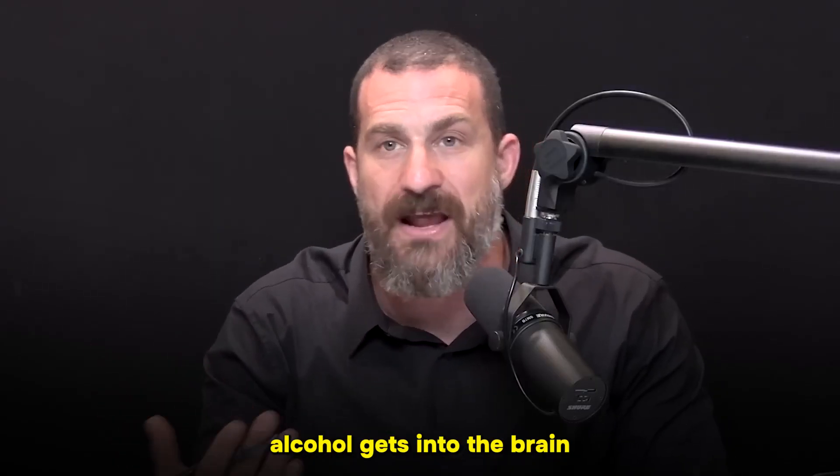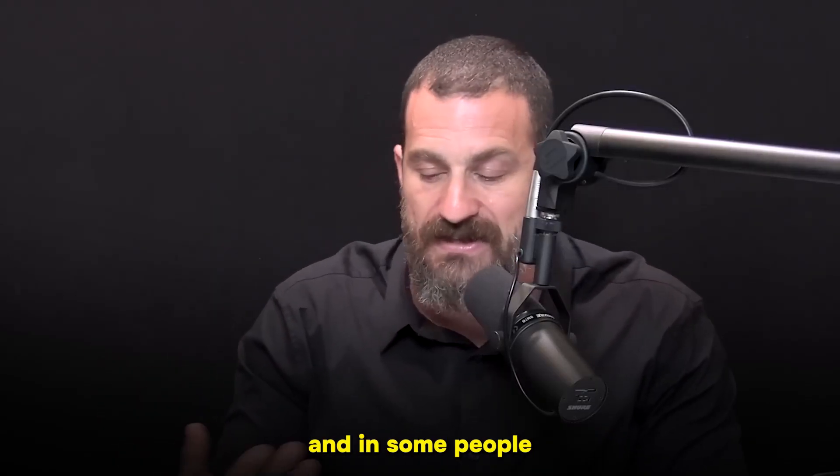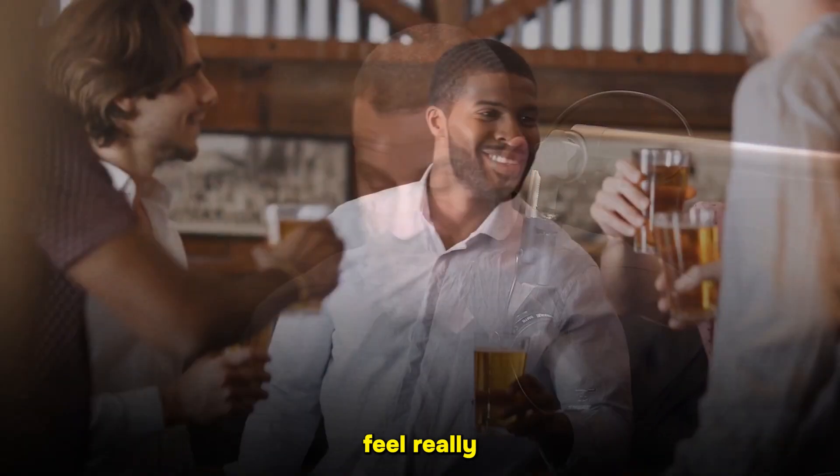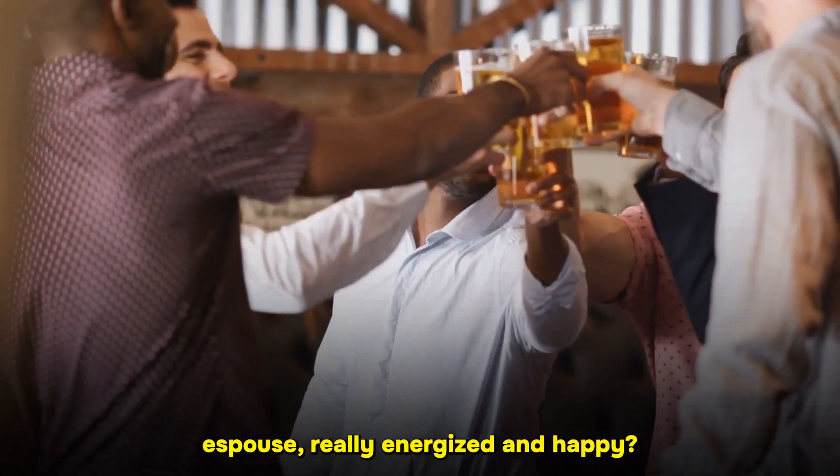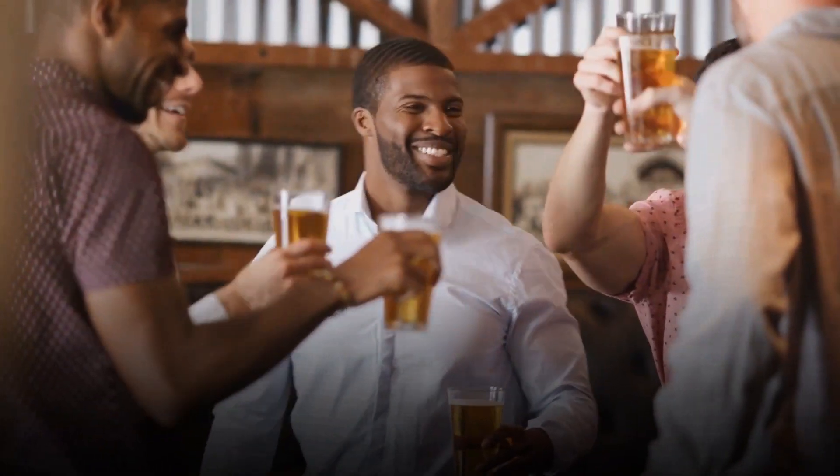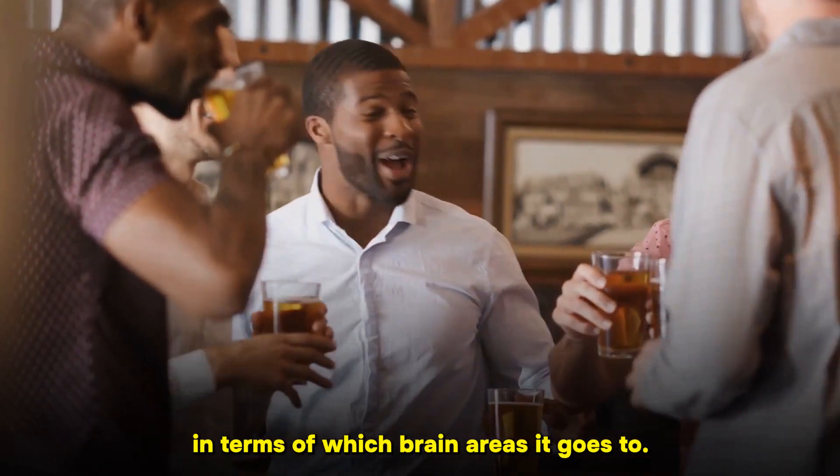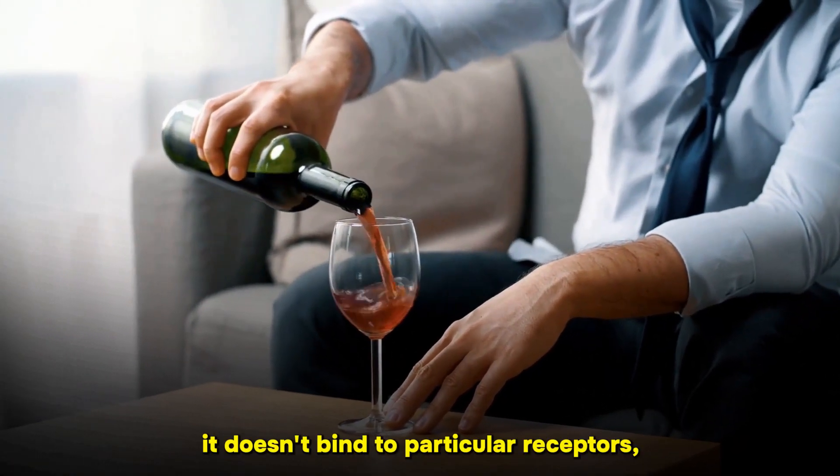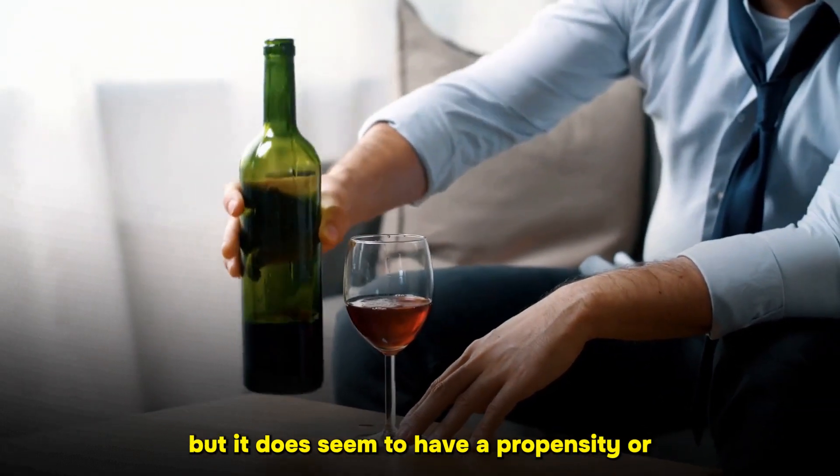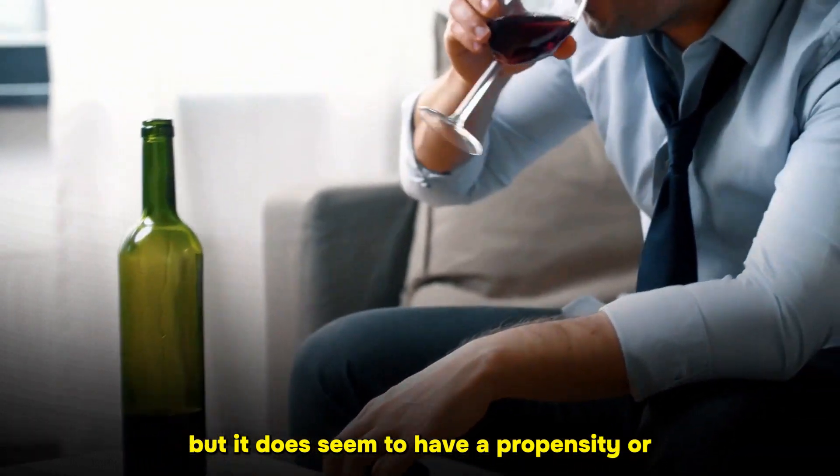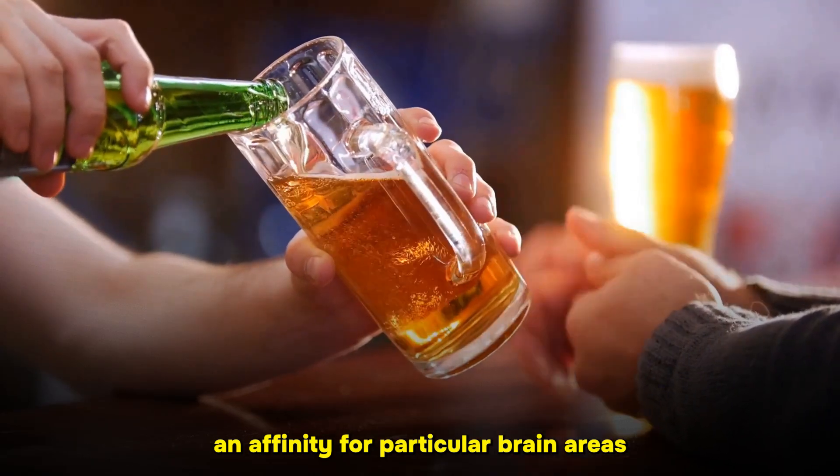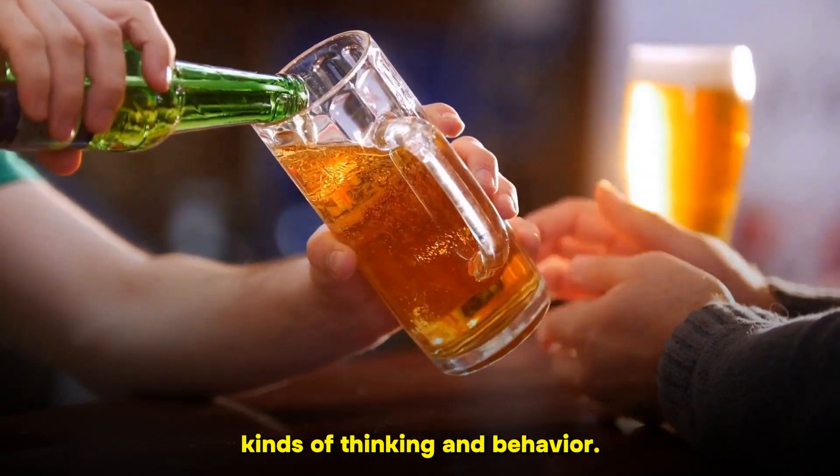What happens when alcohol gets into the brain that makes us feel tipsy or drunk, and makes some people feel energized and happy? Alcohol is indiscriminate in terms of which brain areas it goes to. It doesn't bind to particular receptors, but it does have an affinity for particular brain areas involved in certain kinds of thinking and behavior.